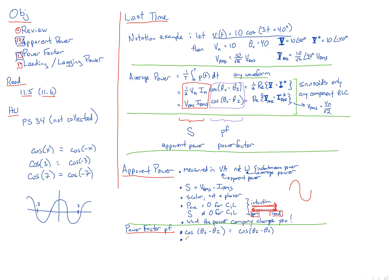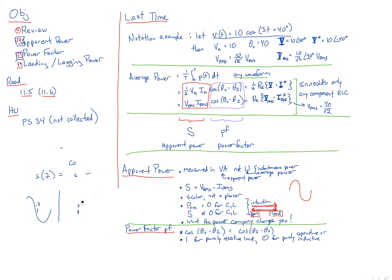For a purely resistive load, θv minus θi is zero, so the power factor is cosine of zero, which equals one. For a purely capacitive or inductive load, there is a 90-degree phase shift — either plus or minus 90 — and cosine of ±90 is zero. So power factor ranges between zero, which is the worst, and one, which is the best. If you want maximum power from your load, you want a power factor of one — purely resistive — where apparent power equals average power.